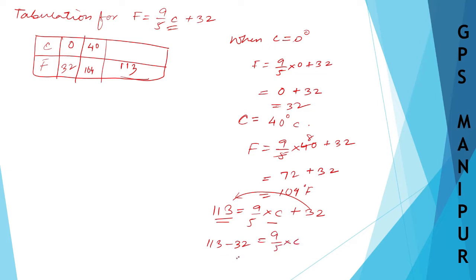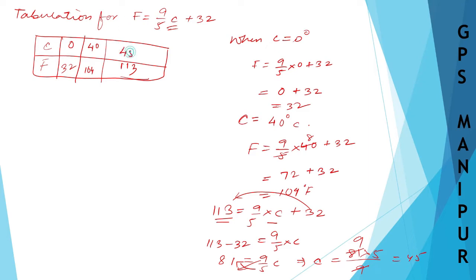113 − 32 = 81. So 81 = 9/5·C. Multiply both sides by 5 and divide by 9: C = 81 × 5 / 9 = 45. So when F = 113°F, C = 45°C. Now let us take all these points and draw the graph.